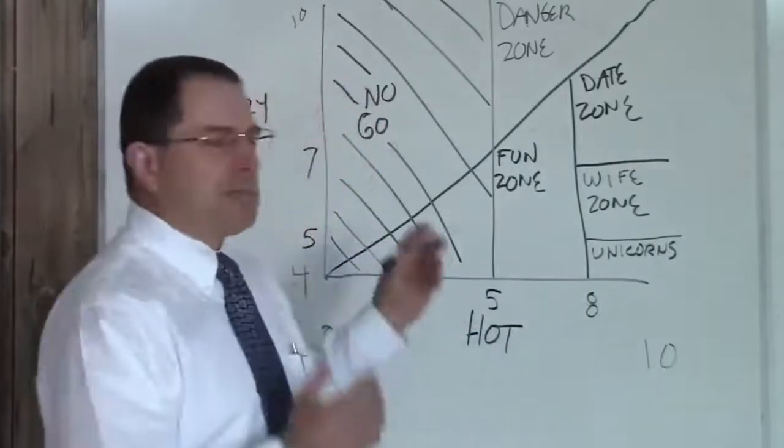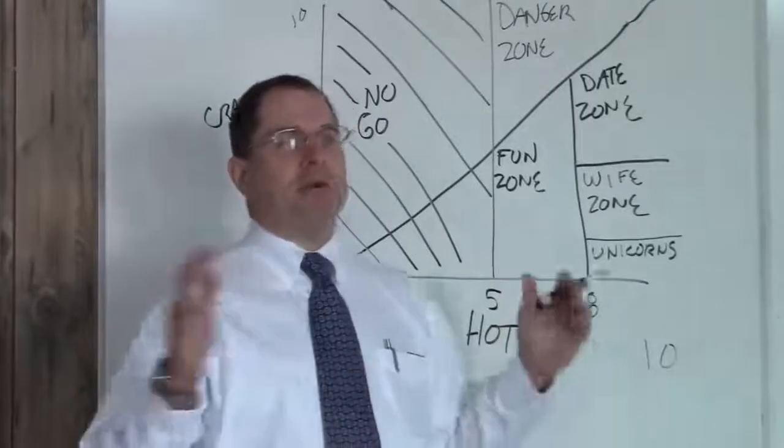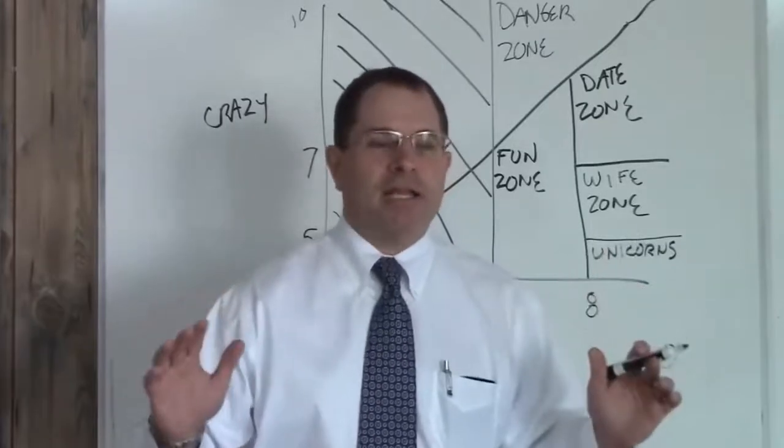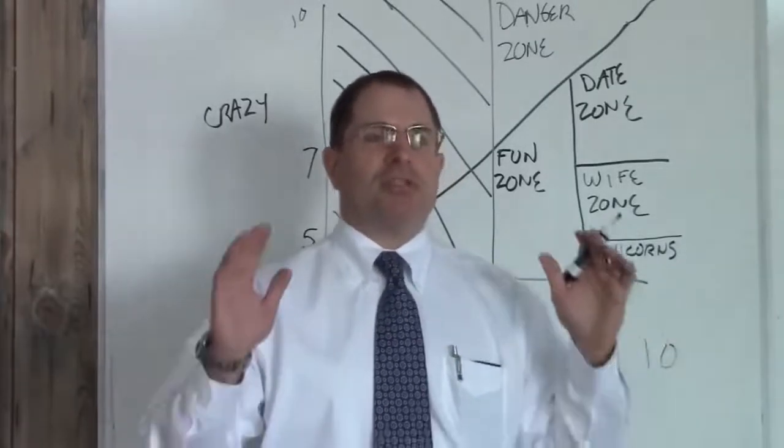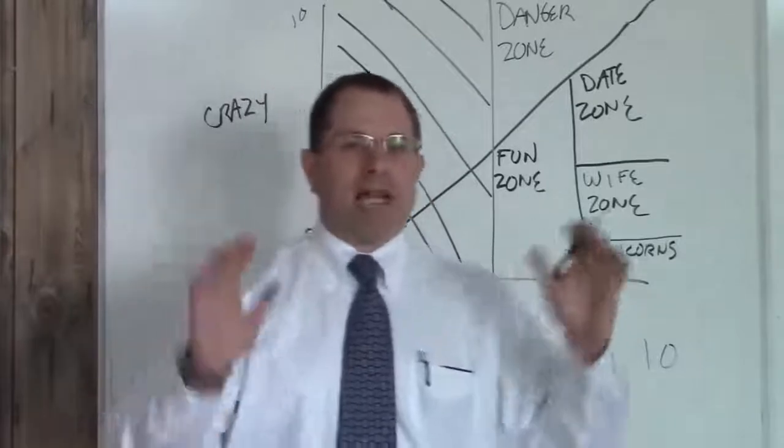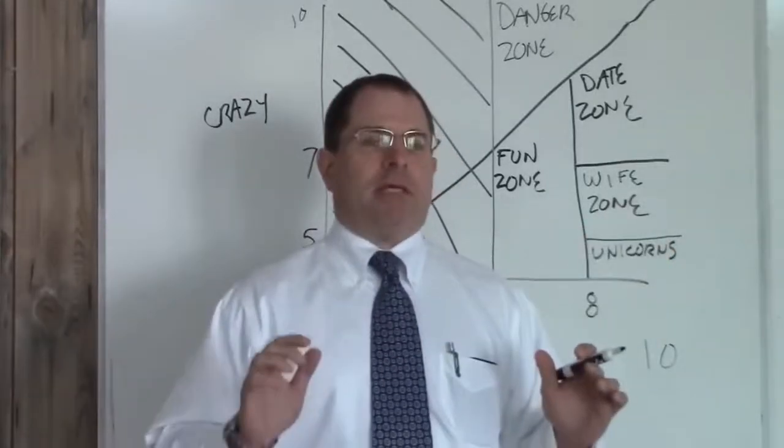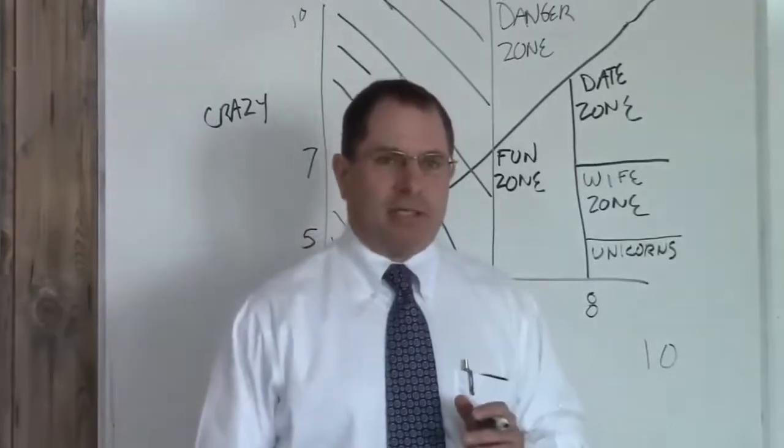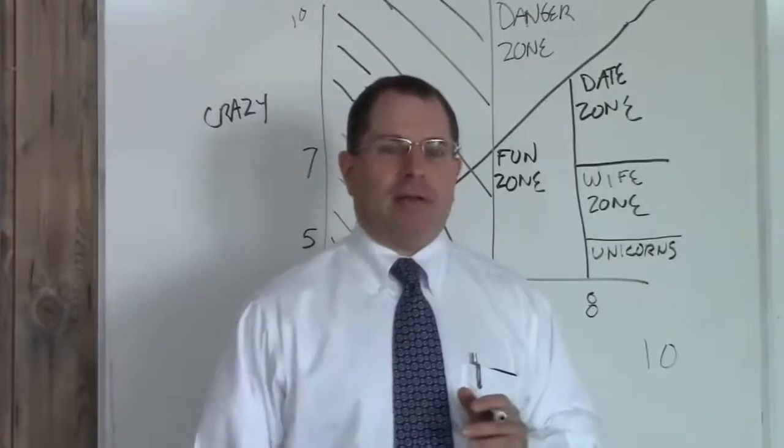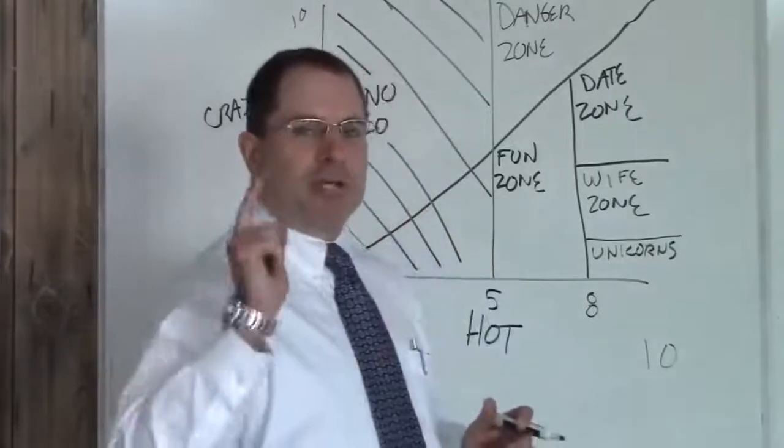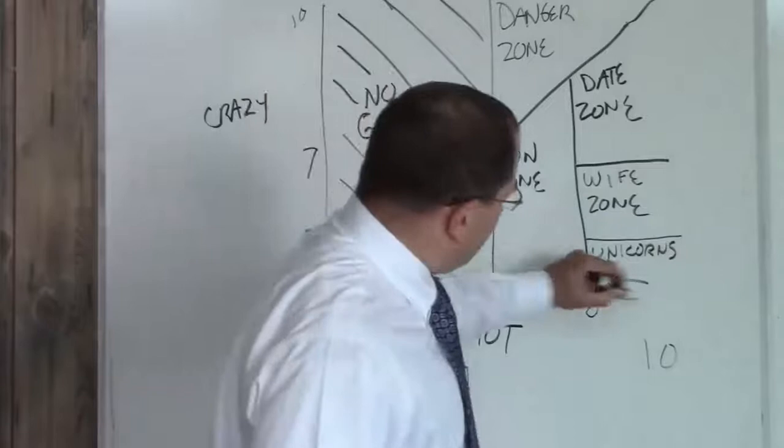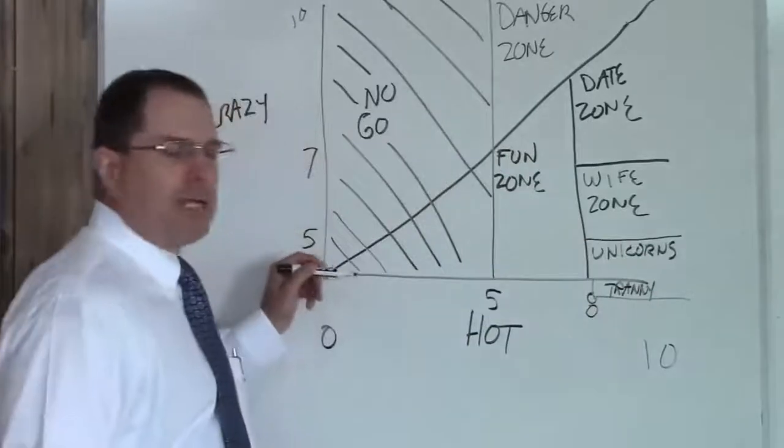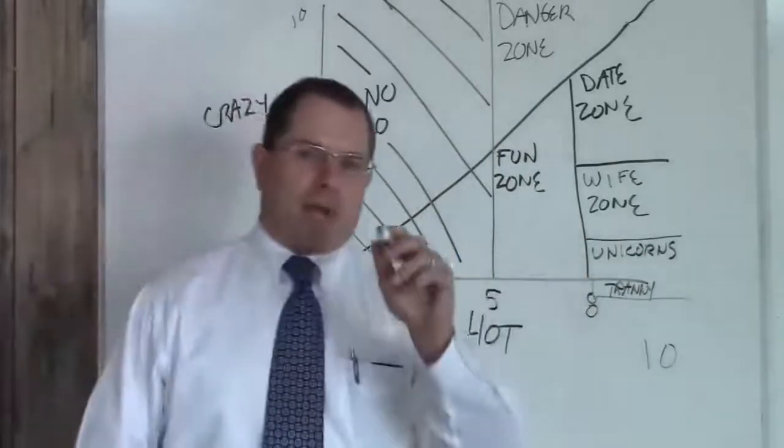I was explaining this to a guy one time. He said he met a girl who's smoking hot, at least a nine, and she's chill, totally cool, not even a three crazy. I said, you're telling me she's a nine hot and a two or three crazy? He said yeah. I told him, you should be careful. That's a dude. You're talking to a tranny. So down here below a four crazy and above an eight hot, you're probably talking to a dude.